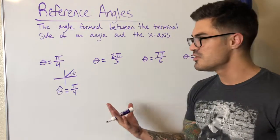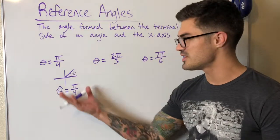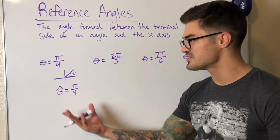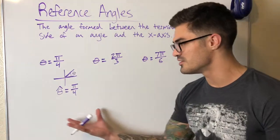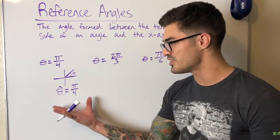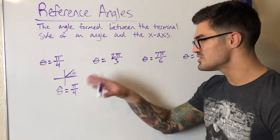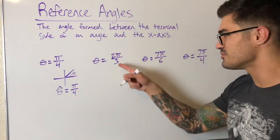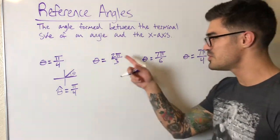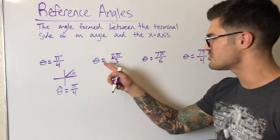For practical uses, we never really find reference angles in the first quadrant — it just doesn't make sense. But you might get a quiz or exam question asking for the reference angle of something in the first quadrant, and it's good to know that it's just the angle itself.